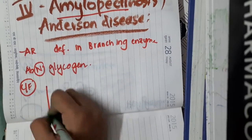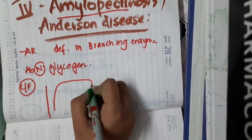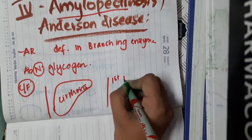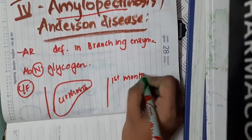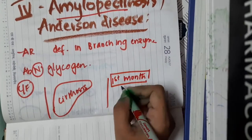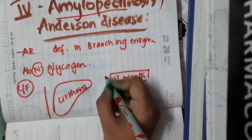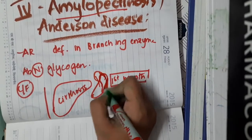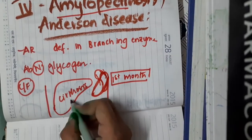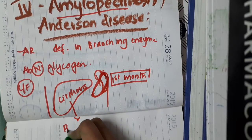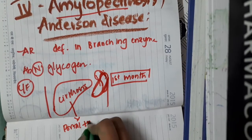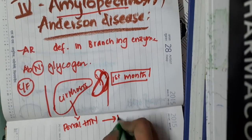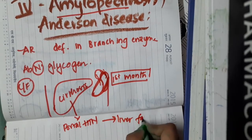Looking at the clinical features, mainly in the liver, the baby presents with cirrhosis, especially in the first month of life. Splenomegaly is also seen in these patients. This cirrhosis will progress to portal hypertension, which manifests as ascites and esophageal varices.